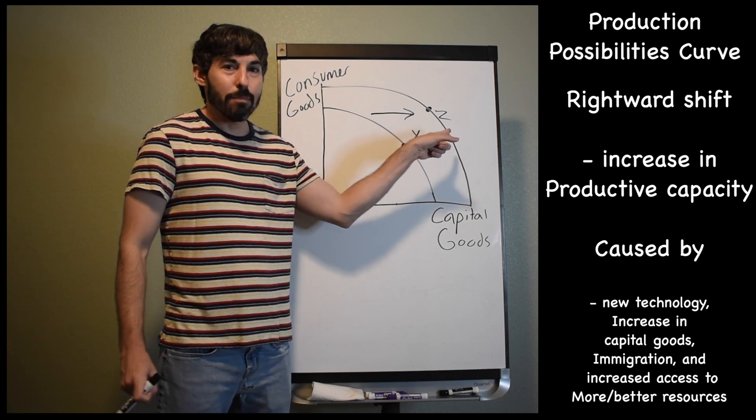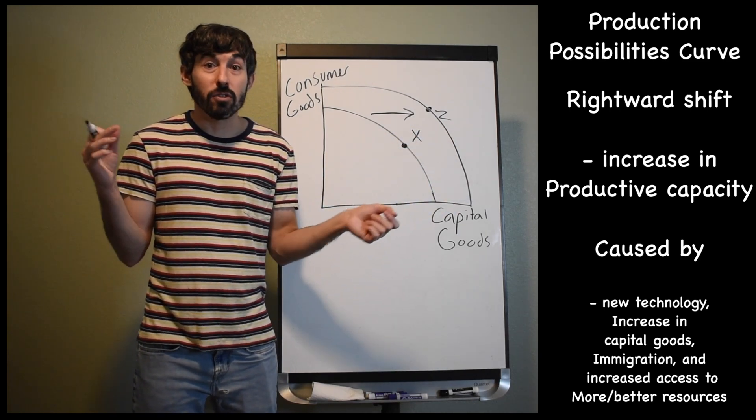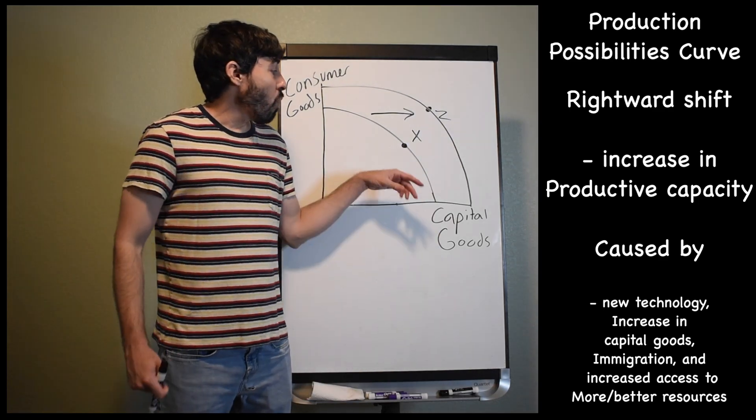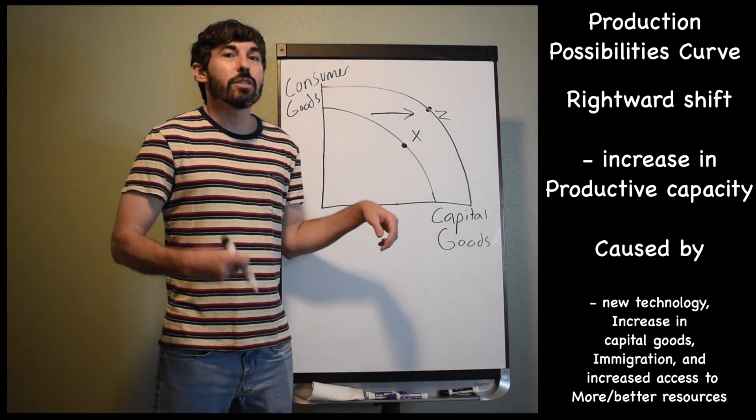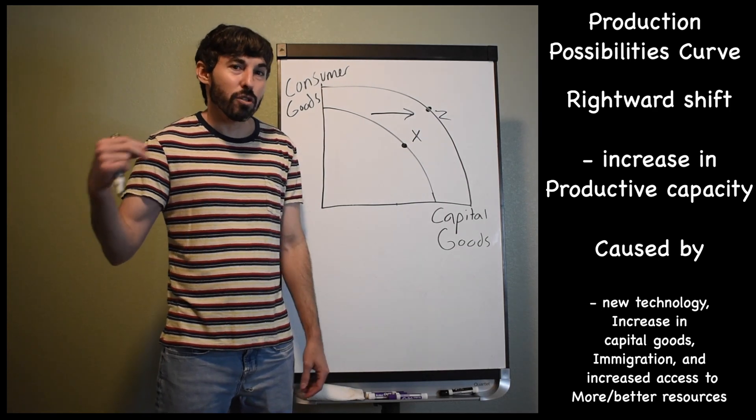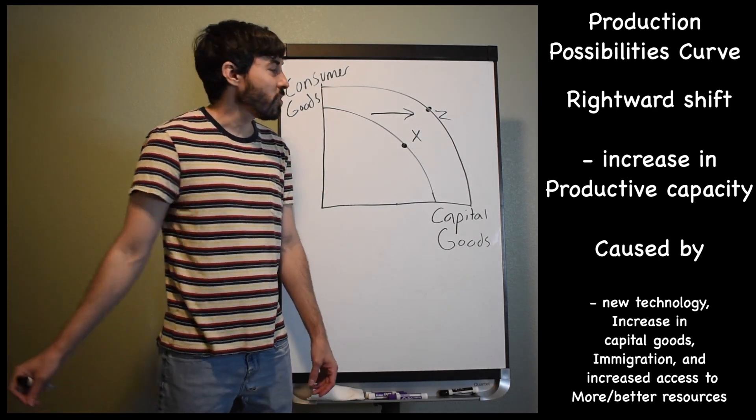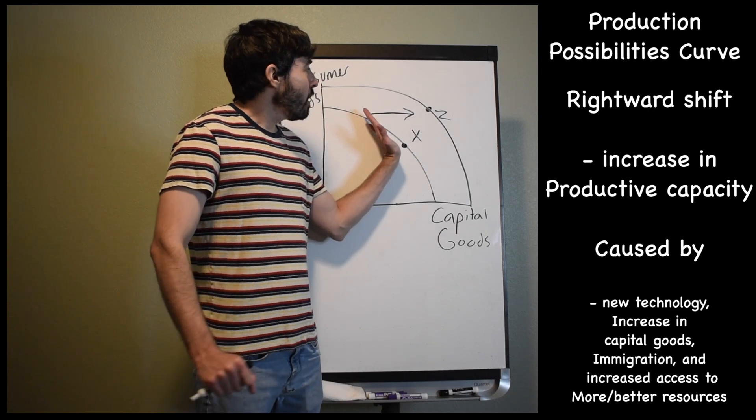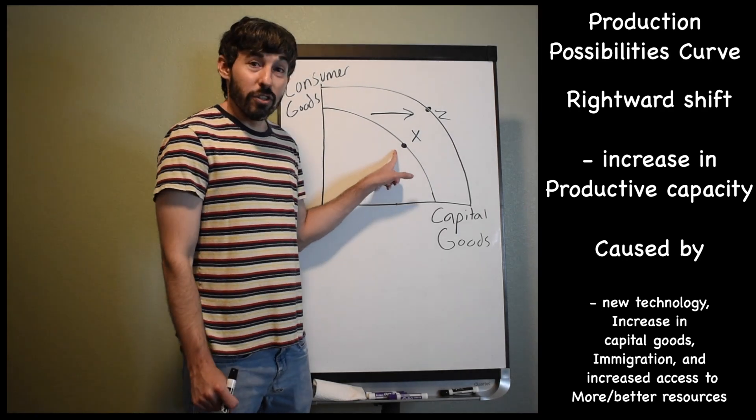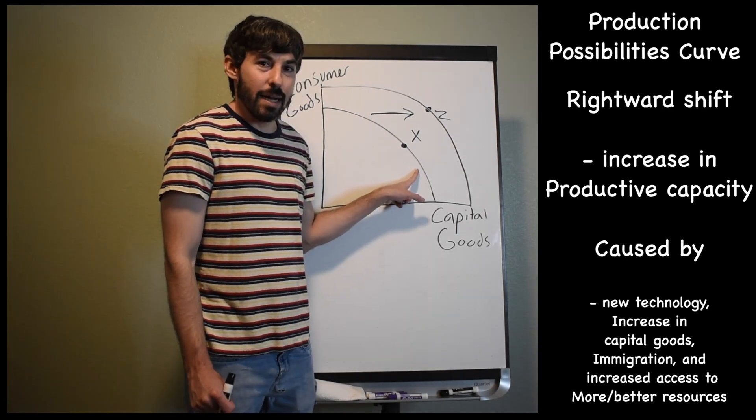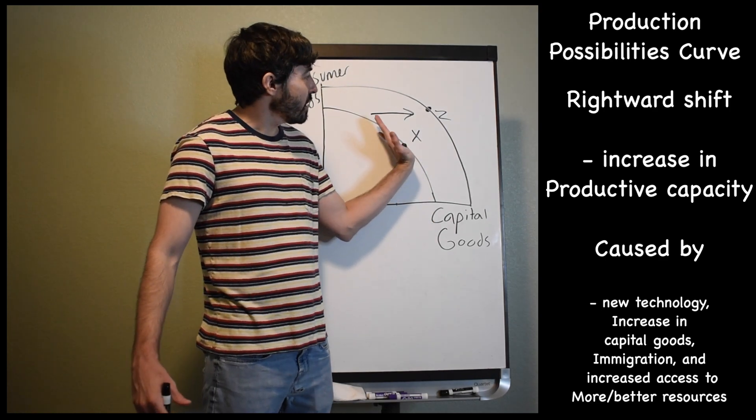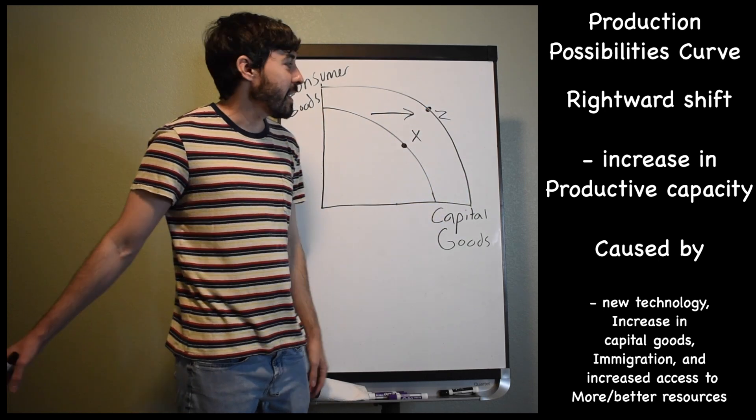Things that will cause this to happen. Maybe new technology that makes it easier to produce goods and services. Robots on the assembly line just taking care of business. Or it could be an increase in capital goods. It might not be new technology. It might just be businesses purchasing existing technology and buying machines, robots, factory equipment. And now, with more machines per worker, we can produce more goods and services. So if we look here, if our dot starts moving toward capital goods, we would expect that economy to grow in the future and have an increase in their production possibility curve or their productive capacity.